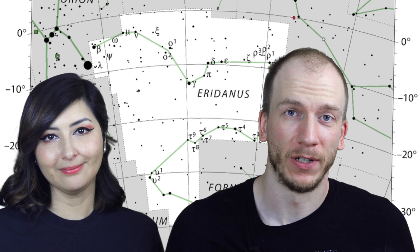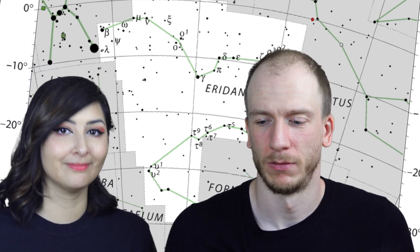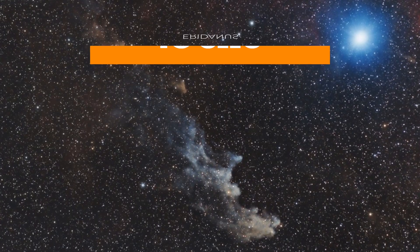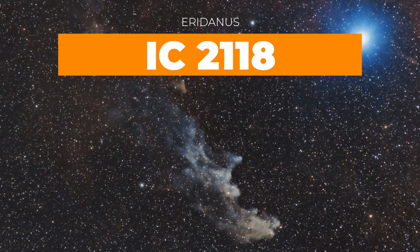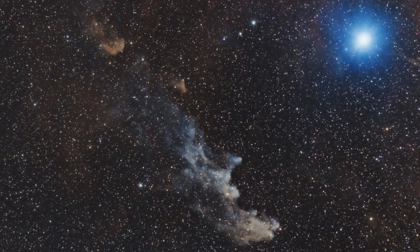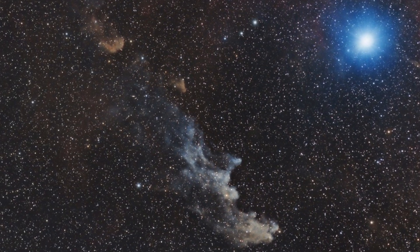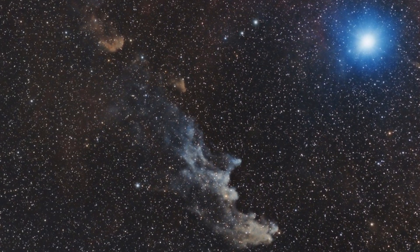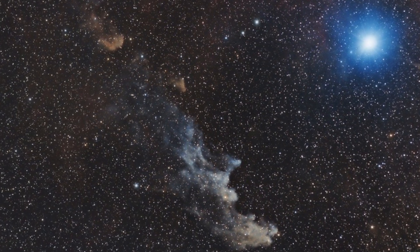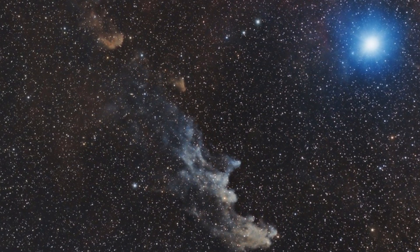Next, very close to Orion in the constellation Eridanus, is the faint but impressive Witch Head Nebula. It's very large and very close to the bright star Rigel, and it's a very beautiful nebula. Just be sure you go to a dark site because it's a reflection nebula — kind of dark, so not very simple to get, but impressive. Another challenge.